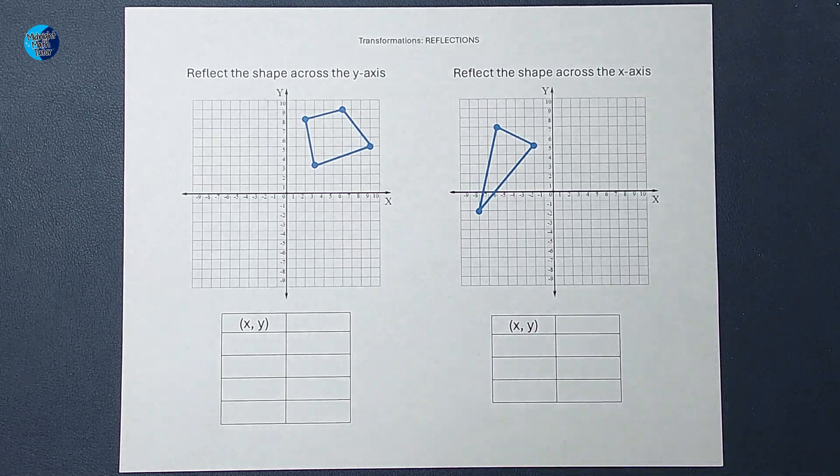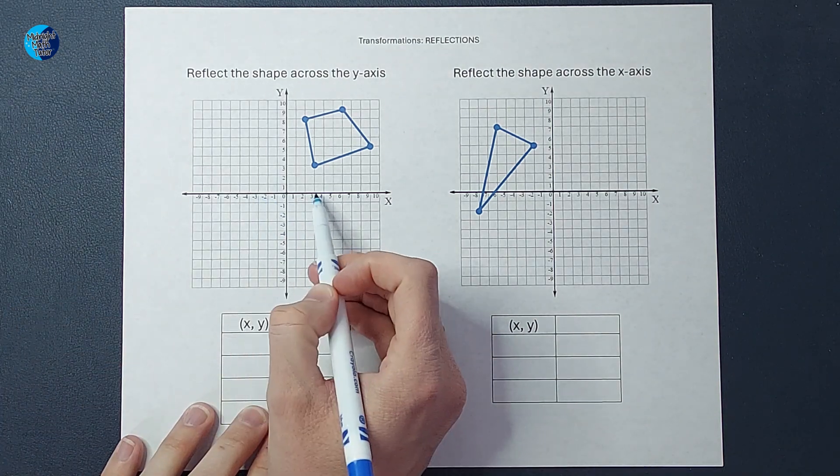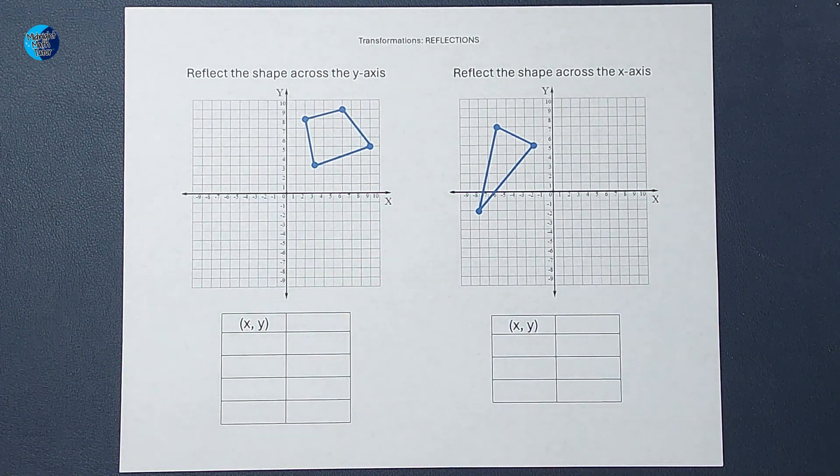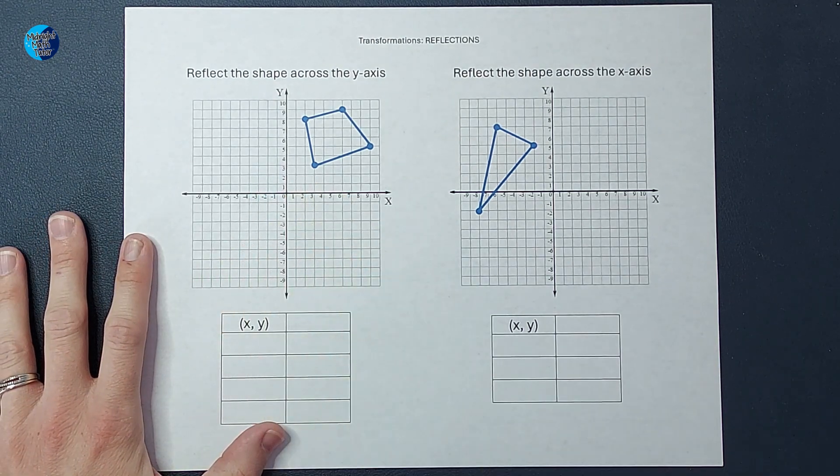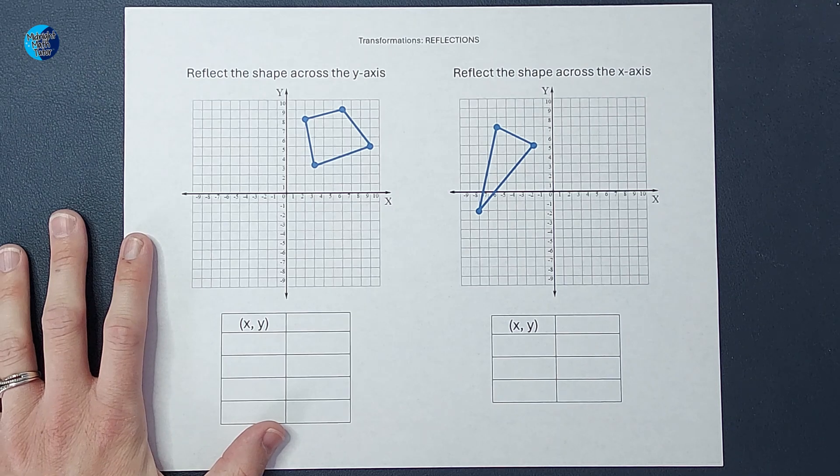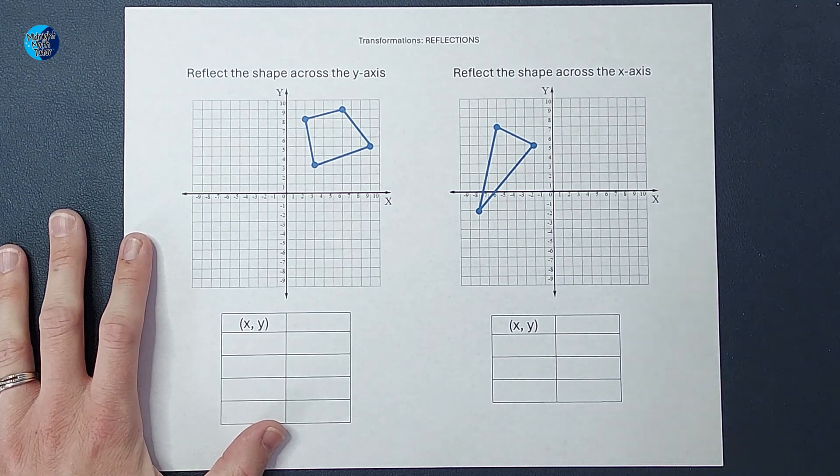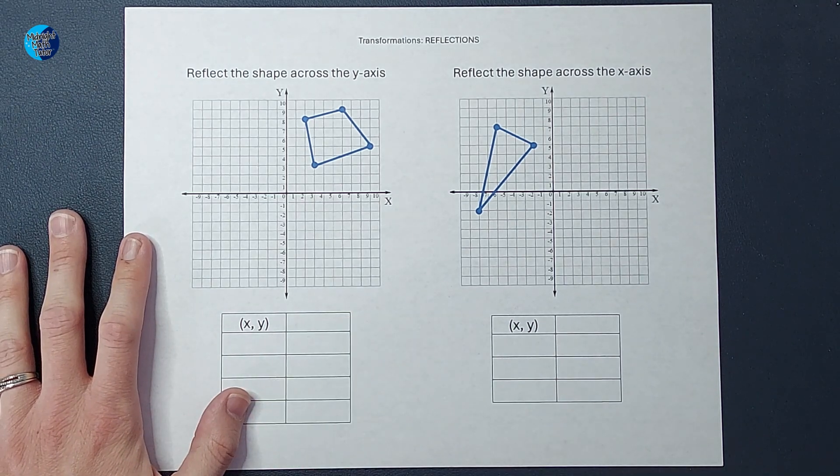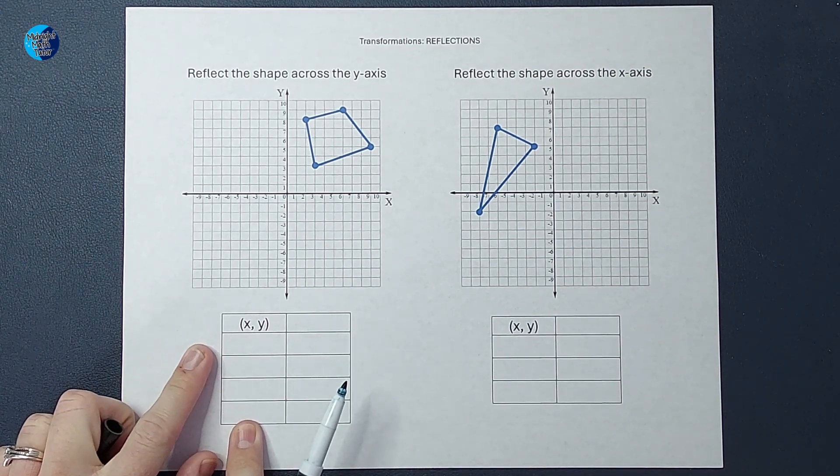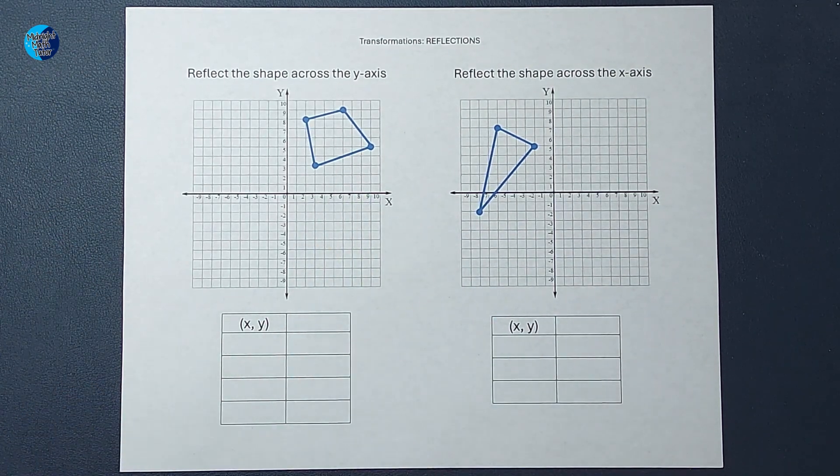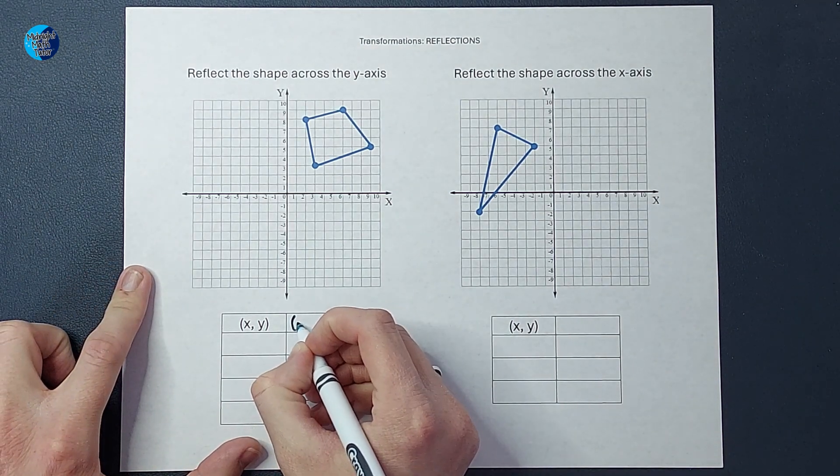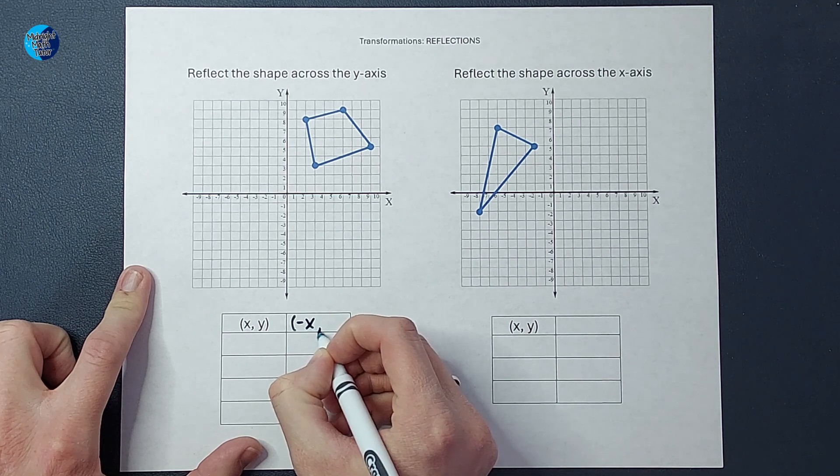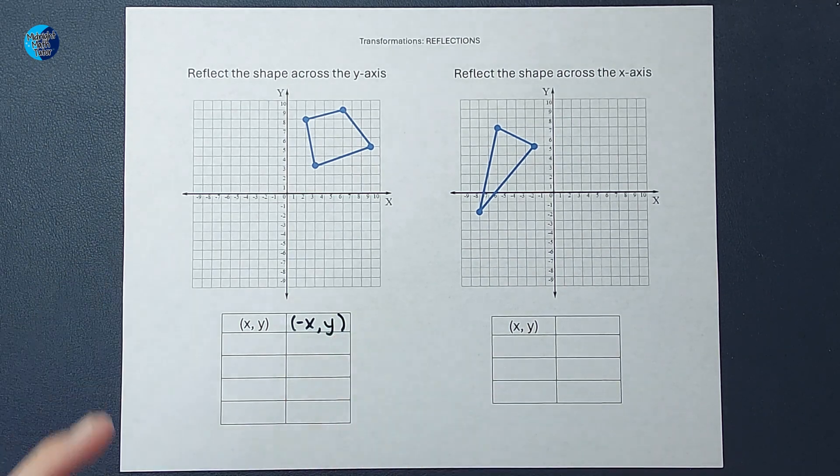Another way to think of that is my y in my ordered pair is going to stay the same. I'm going to go up the same amount. It's the x that's going to change, but the only thing that's going to change about it is its sign. So if I have my original points here of this shape, the reflected shape, we are just going to change x's sign and y is going to stay the same.